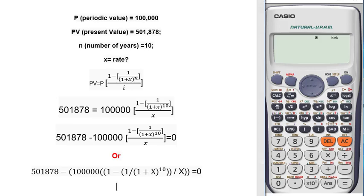Today I'll show you how to find the interest rate of present value of an annuity. We are using ordinary annuity here. Our periodic value is 100,000 and this is our present value of 501,878. Number of years equals 10, and we have to find out interest rate x.